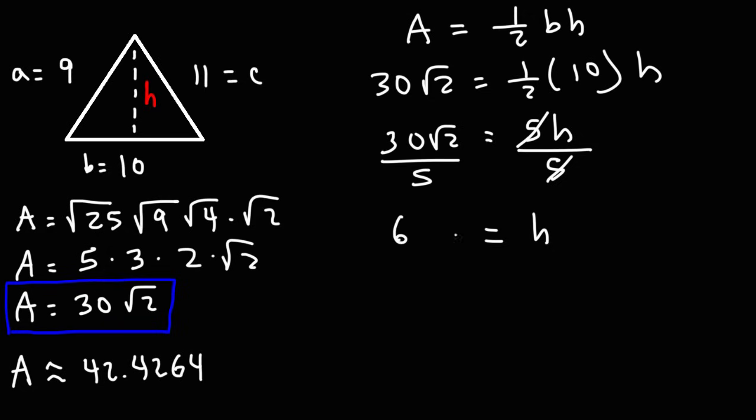So the exact value for the height of the triangle is 6 times the square root of 2. For those of you who want a decimal value, that is approximately 8.485.